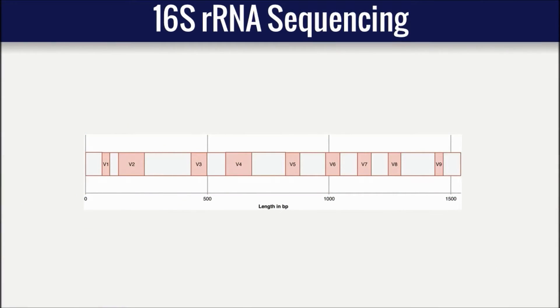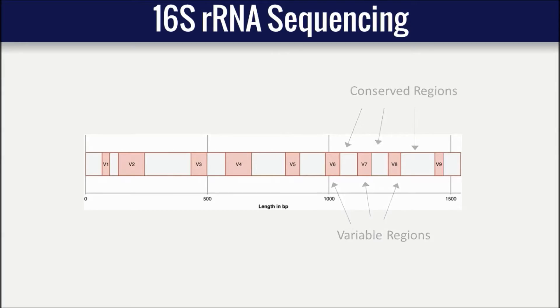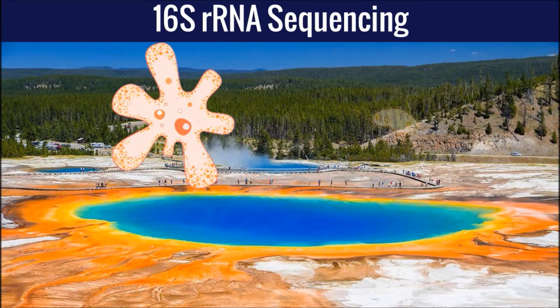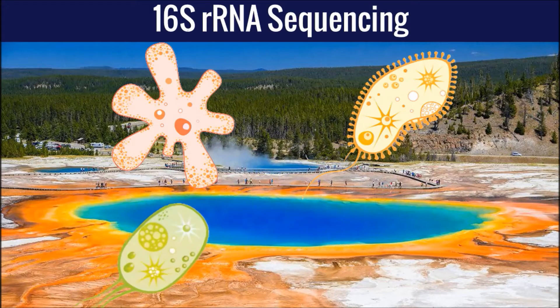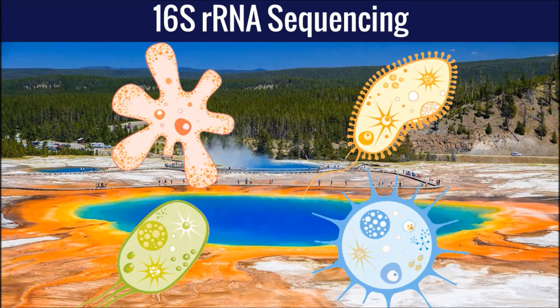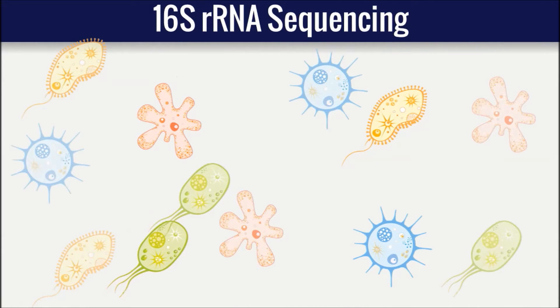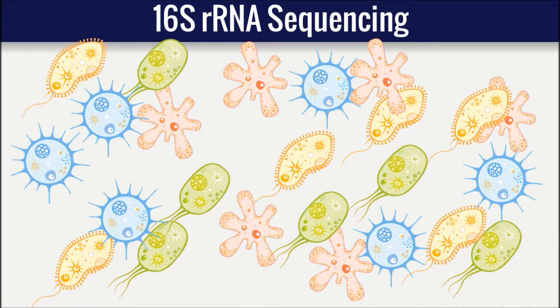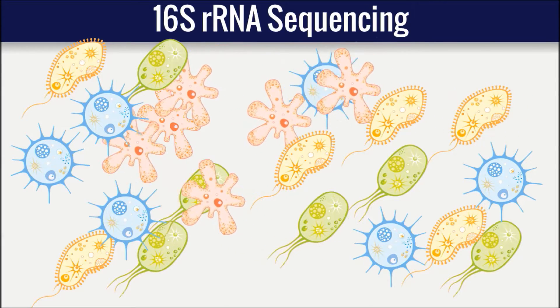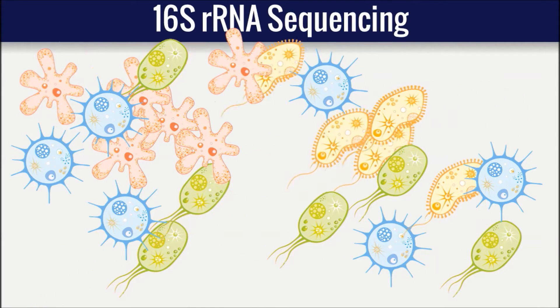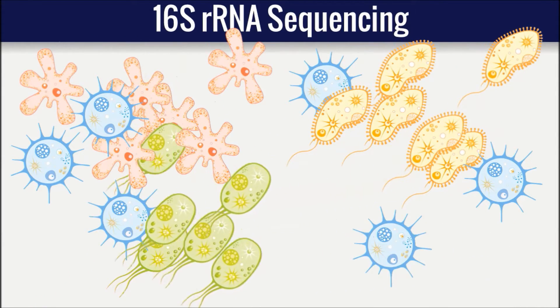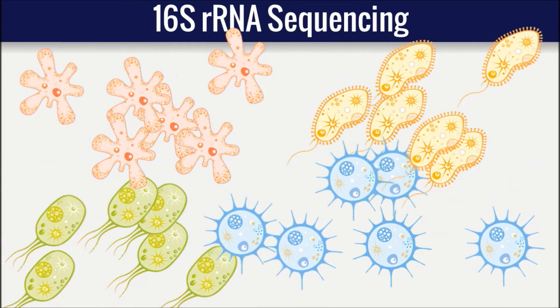Conveniently, the 16S ribosomal RNA gene consists of both highly conserved and variable regions. Universal PCR primers can be designed to target the conserved regions of 16S, making it possible to amplify the gene in a wide range of different microorganisms from a single sample. While the conserved region makes universal amplification possible, subsequent sequencing of the variable regions allows discrimination between specific microorganisms such as bacteria, archaea, and microbial eukarya.